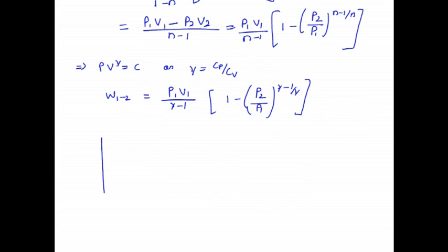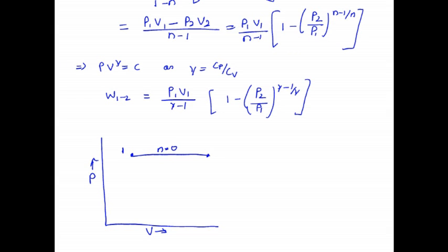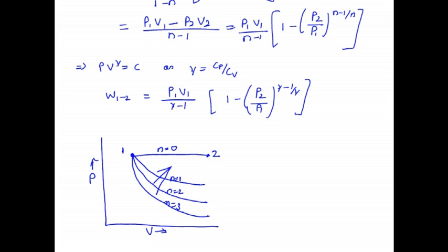If we draw the PV diagram for the PV^N = C process, the shape of the curve always depends on the value of N. Starting from initial state 1, when N equals 0 the curve has one shape; when N equals 1 the curve changes; when N equals 2 the curve steepens further; and so on. So the shape of the curve and the work done always depend on the value of N. When N equals infinity, the curve becomes a vertical line.